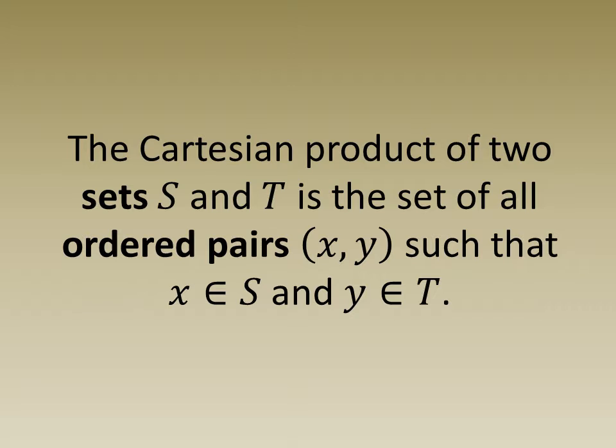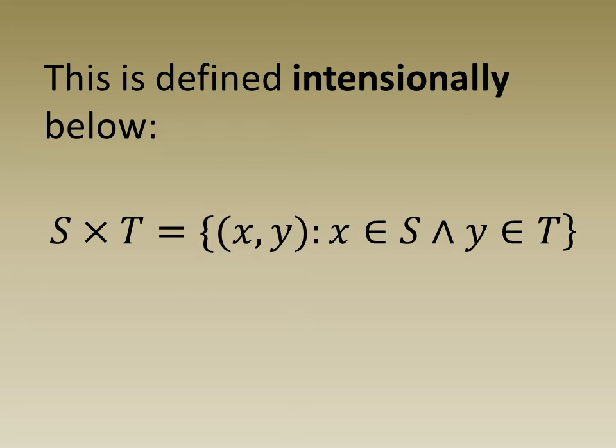Cartesian product of two sets S and T is a set of all ordered pairs (X, Y) such that X belongs to S and Y belongs to T. The result is itself a set and is defined intentionally below.